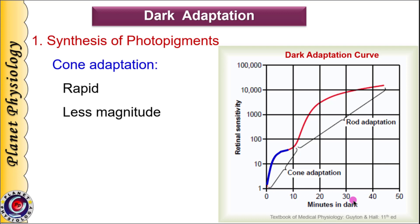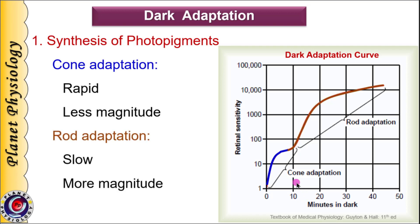The X axis represents time spent in dark in minutes, and the Y axis is retinal sensitivity in a logarithmic scale, with low sensitivity at the bottom and higher sensitivity at the top. Due to rapid resynthesis of photopigments in cones, retinal sensitivity increases by 10 times within 1 minute of exposure to darkness. Cones adapt maximally within 5 to 6 minutes, increasing sensitivity by about 50 times. Rods begin to adapt after 5 minutes of exposure to darkness, but continue adapting for several minutes to hours. Increased rhodopsin synthesis increases sensitivity by 6,000 times in 20 minutes and by 25,000 times at the end of 40 minutes.